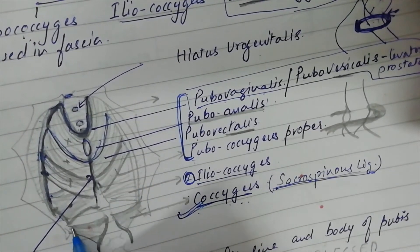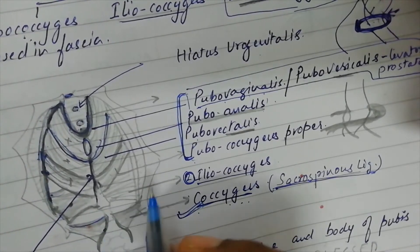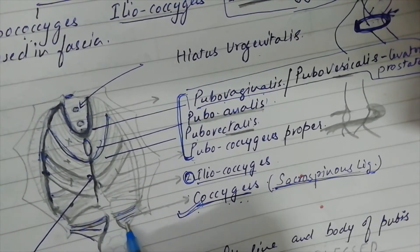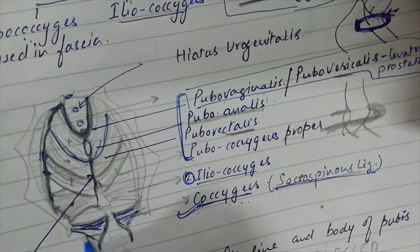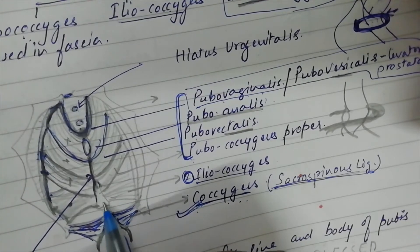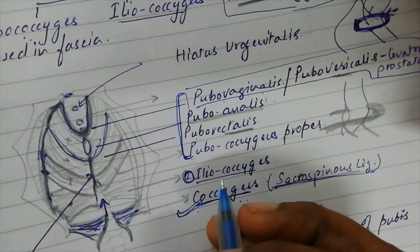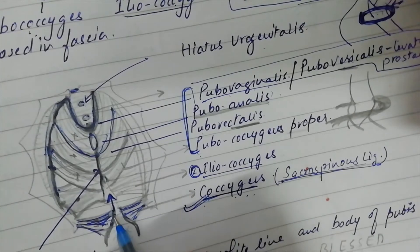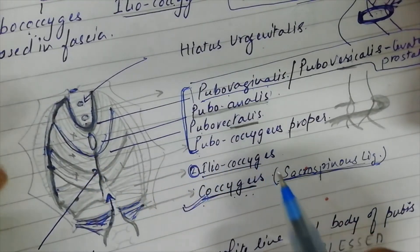The coccygeus originates from the ischial spine and inserts onto the lower piece of the sacrum and coccyx. This triangular muscle's function in lower animals was to move the tail. With the disappearance of the tail in human beings, it pulls the sacrum and coccyx anteriorly — this usually happens after childbirth and passage of feces, when the sacrum is pushed backwards. This muscle pushes it forwards and closes the posterior part of the pelvic outlet.